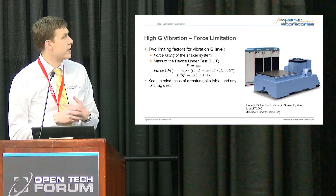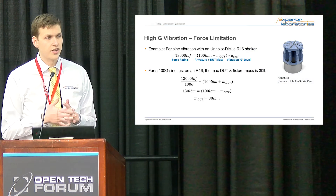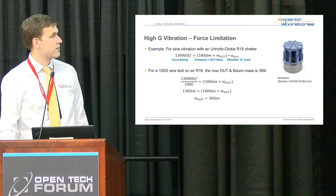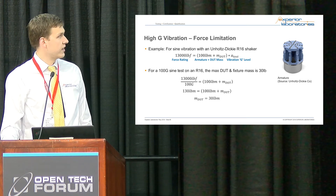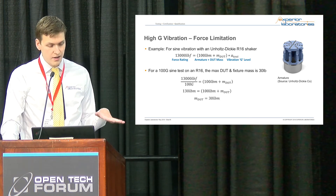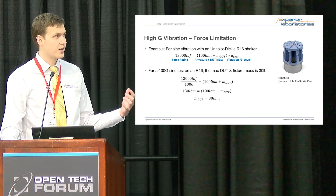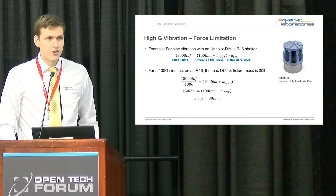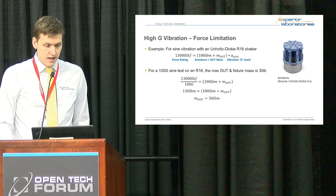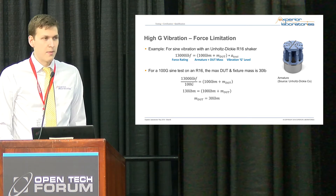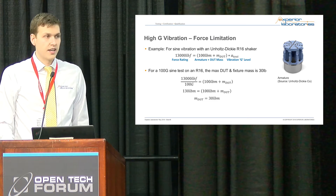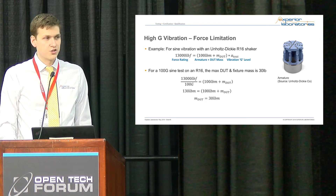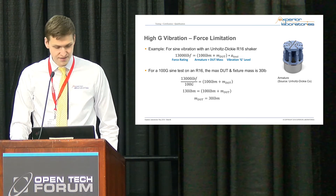For example, on an Unholtz-Dickie R16 shaker — a medium-level, 13,000 pound force shaker — if you wanted to run a 100 G sine test, you take the force pound rating divided by 100 Gs. The R16 has a 100-pound armature, so you add that into your total mass. That means you can only run about a 30-pound object at that 100 G sine level, and that includes the fixture. That's why there are concerns when designing a fixture: is it light enough?